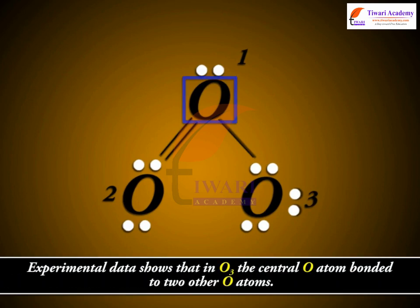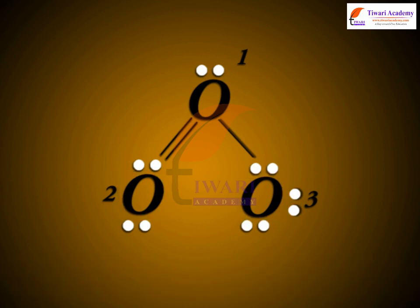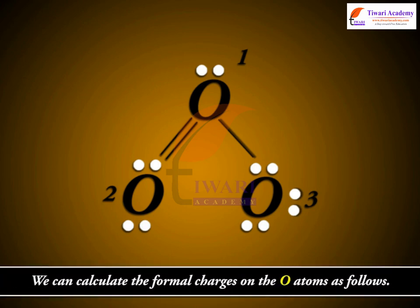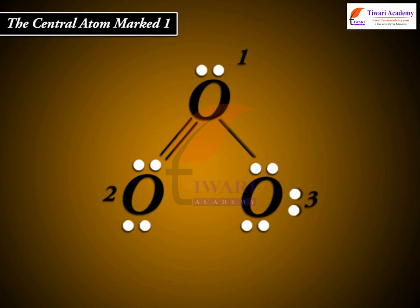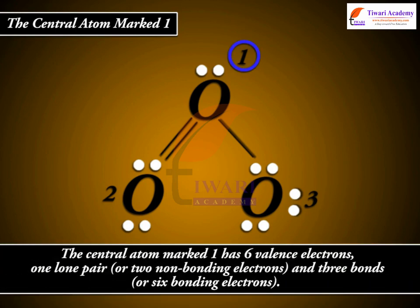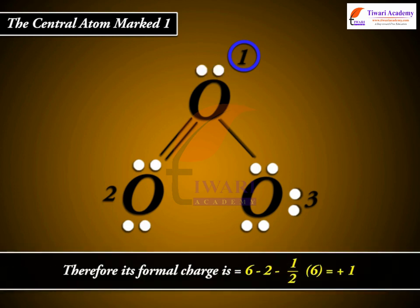Experimental data shows that in O3, the central O atom bonded to two other O atoms in the arrangement shown below. Using the relationship given above, we can calculate the formal charges on the O atoms as follows. The central atom marked 1 has six valence electrons, one lone pair or two non-bonding electrons, and three bonds or six bonding electrons. Therefore, its formal charge is equal to six minus two minus one by two into six is equal to plus one.